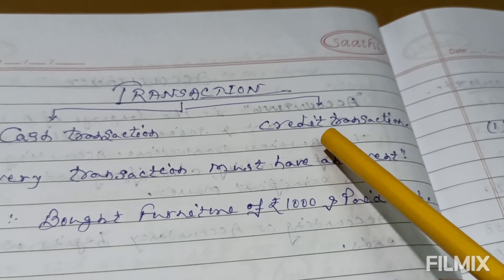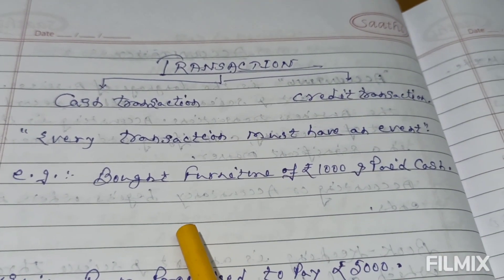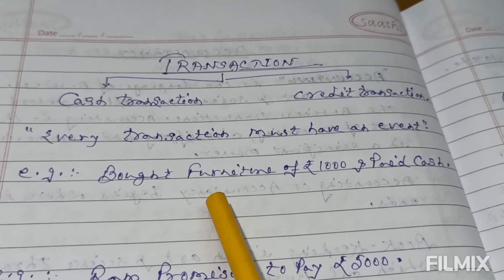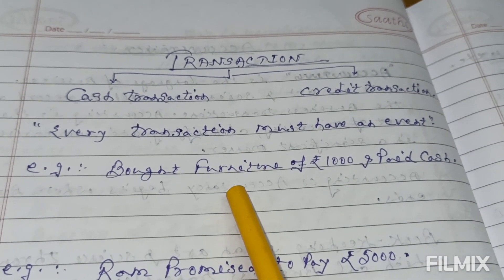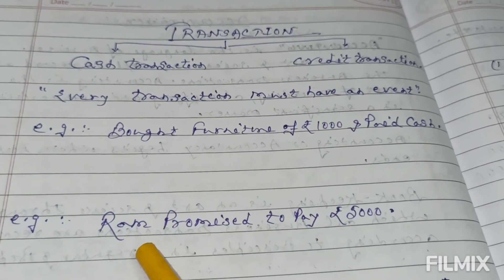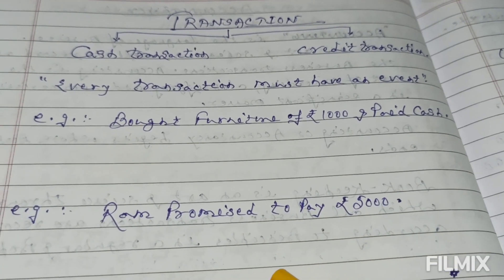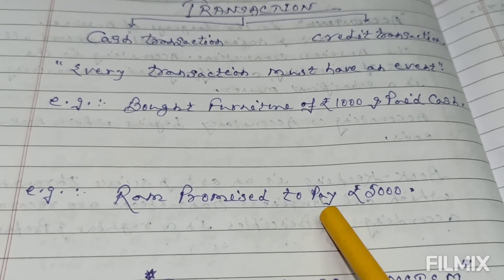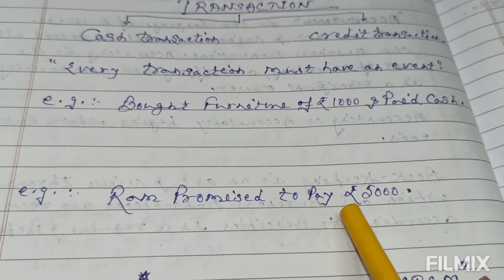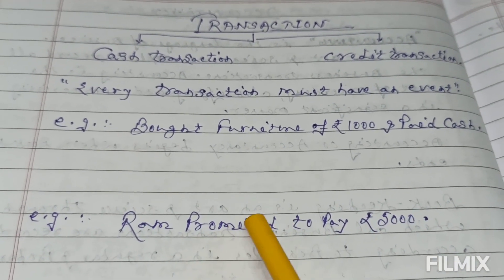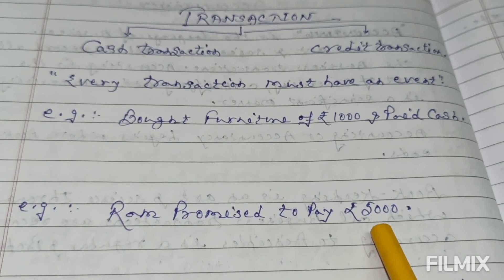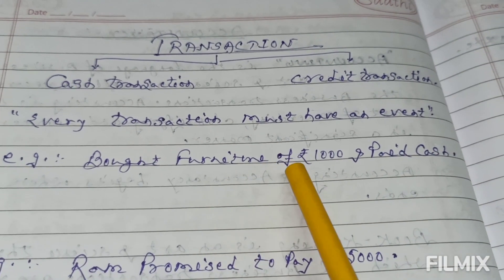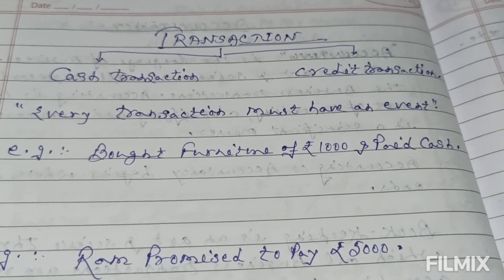In accountancy, only those transactions are recorded which have a monetary value and also an event. An event means a result. For example: Ram promised to pay rupees 5000 — he has only promised, he hasn't executed his promise. There is no event here, so it won't be recorded. Only transactions with an event can be recorded, like bought furniture of rupees 1000 and paid cash — that is an event, so it will be recorded.